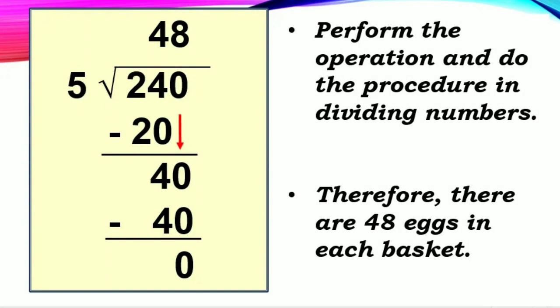And lastly, it's time to solve the problem. 240 divided by 5: 2 divided by 5 cannot be done, so we move on to 24. 24 divided by 5 is 4. 4 times 5 is 20. 24 minus 20 is 4. Bring down 0. 40 divided by 5 is 8. 8 times 5 is 40. 40 minus 40 is 0. So, there are 48 eggs in each basket.